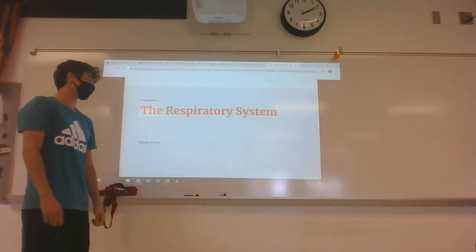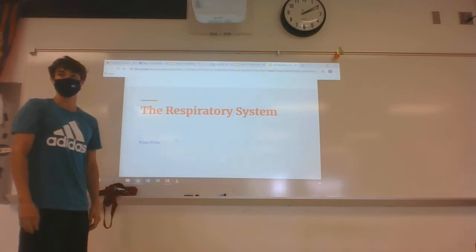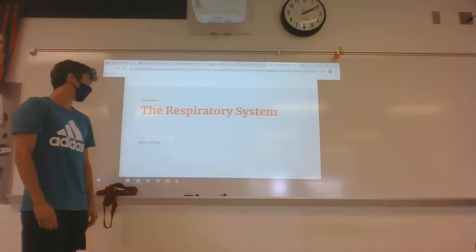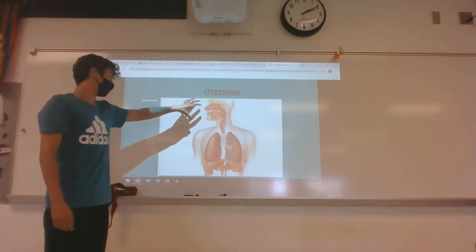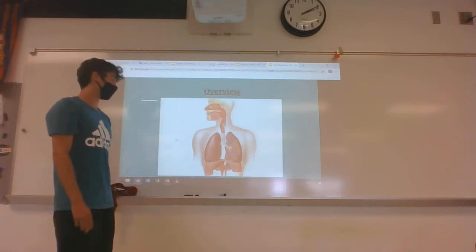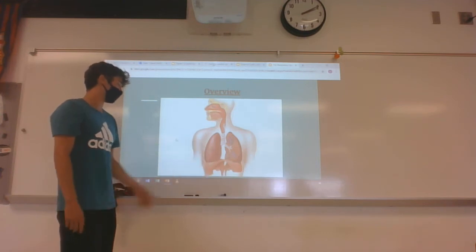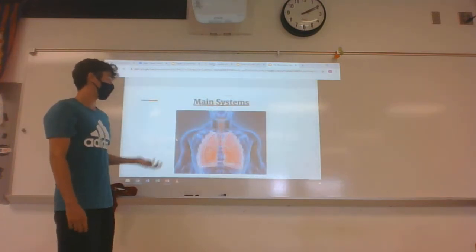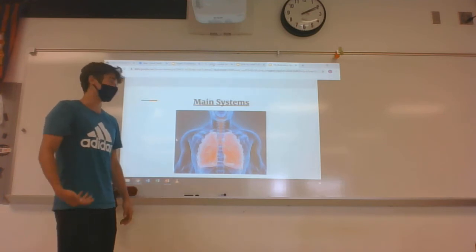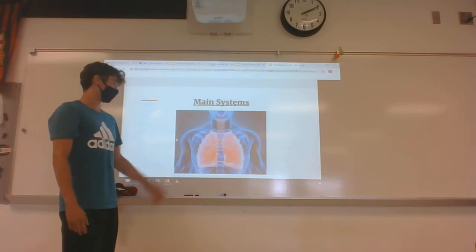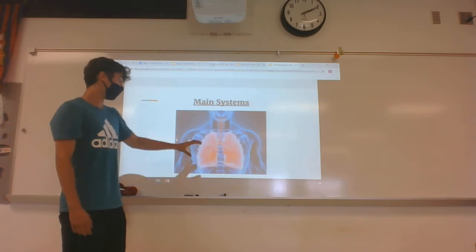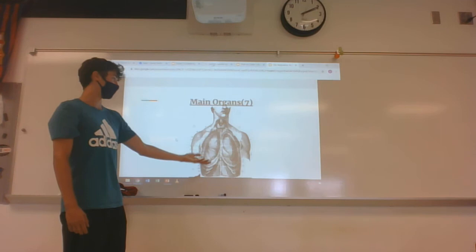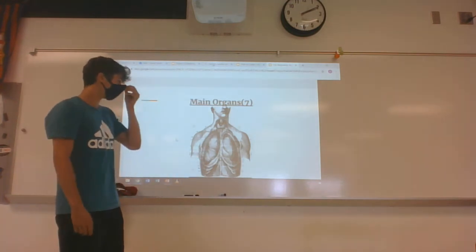I decided to do the respiratory system — everybody has to breathe, so it's a pretty interesting topic. This is the overview of the entire system. Up here we have the nose and the openings into the respiratory system where you take in air, and it comes down into the main area, which is the lungs. It's mainly an involuntary system — we're always breathing. The three main organ systems are the airways, the lungs, and the diaphragm and other muscles.